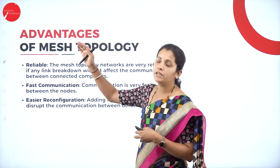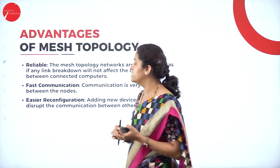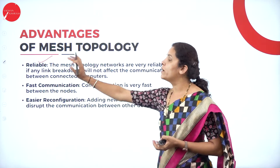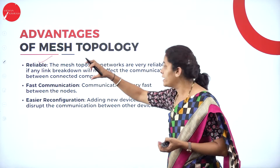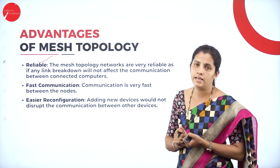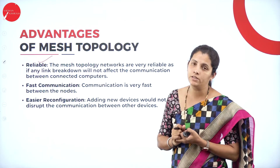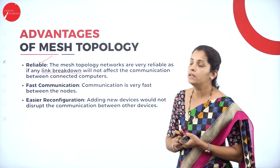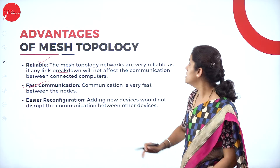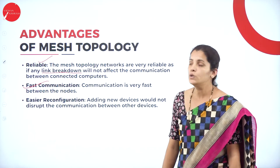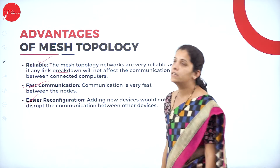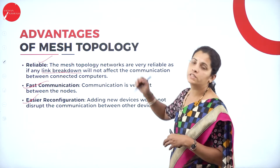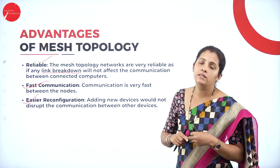Let us see the advantages of mesh topology. The first advantage is that it is reliable — mesh topology networks are very reliable because if any one link breaks down, it will not affect the communication between connected devices, since each computer has more than one connection. It also provides fast communication between nodes. The last advantage is that it is easier to reconfigure — adding or removing a device is very easy and does not affect network performance.